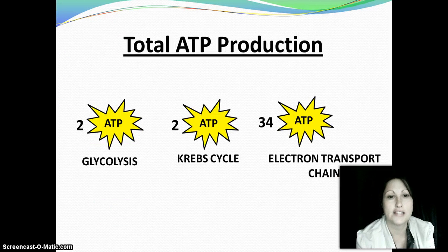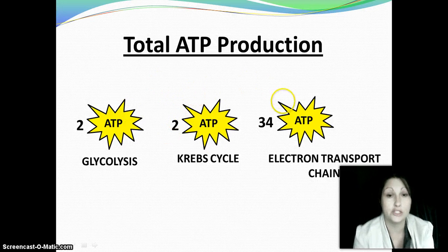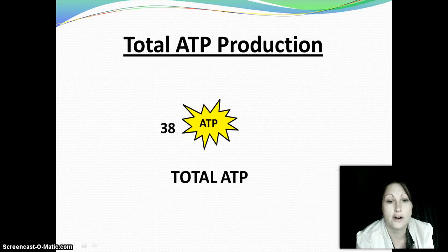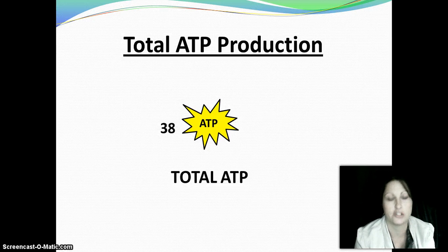Let's put that together for aerobic cellular respiration. We made two ATP directly in glycolysis, two directly in the Krebs cycle, and then 34 in the electron transport chain. Putting those all together gives us 38 total ATP. This is a magical number to remember — your instructor will ask you how many total ATP are produced in aerobic cellular respiration.